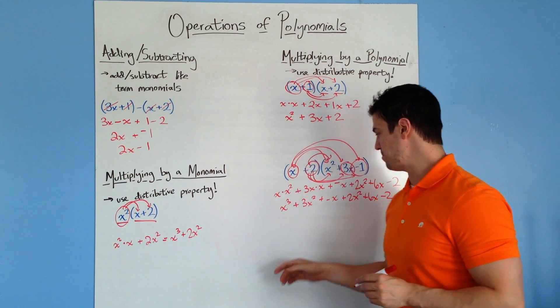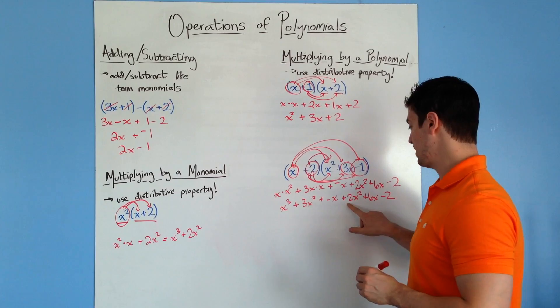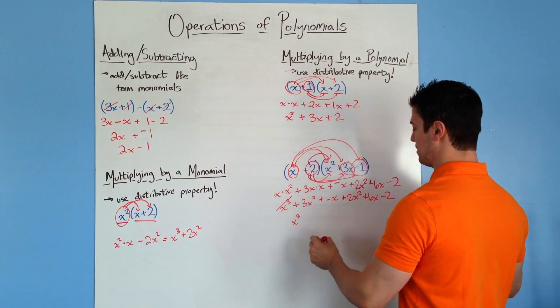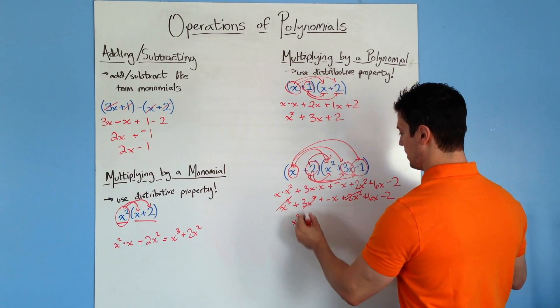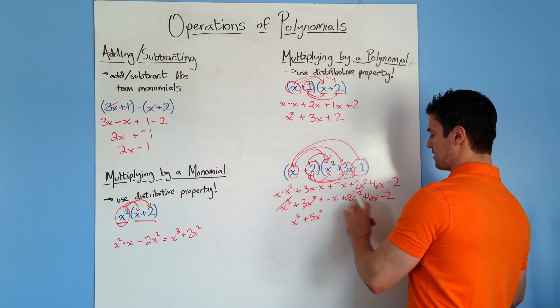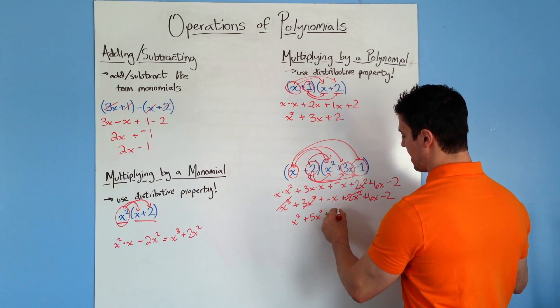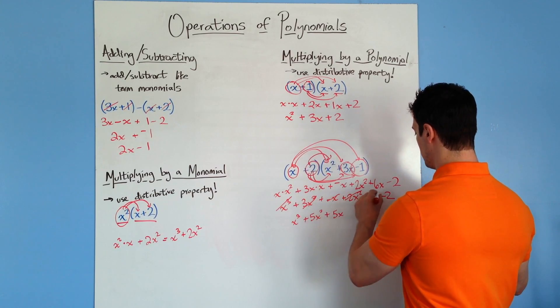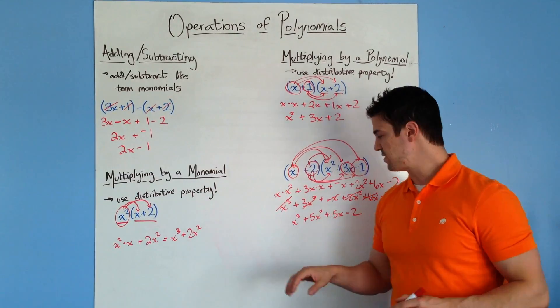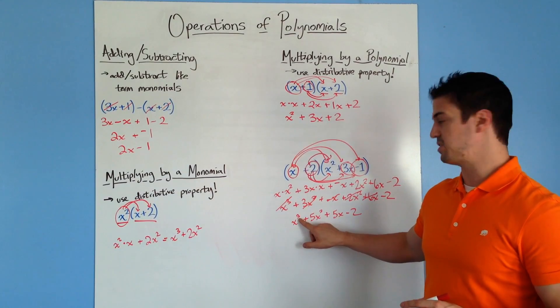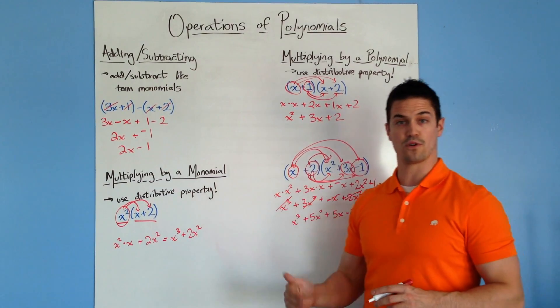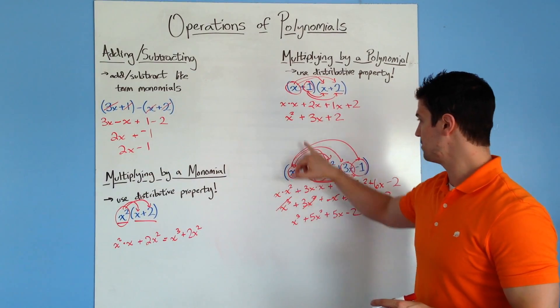We can do some further simplification because we have an x squared term here and an x squared term here. So I'm going to drop down the x cubed. I'm going to start putting lines through things so I can see them a little bit easier. So then we have 5x squared. Then I have a negative x and a 6x to get 5x, so done with those. And then dropping the minus 2, and then you have your answer. It's all simplified. And notice that the powers are going from increasing order. You always want it to go from 3 to 2 to 1. You always want the highest order first for the variable.